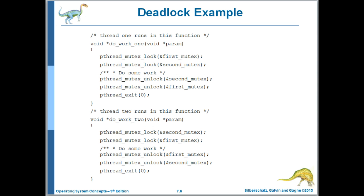Here's an example that shows deadlock due to mutexes not being requested in a numerical order. The first thread requests the first mutex, then the second mutex in that order. You can see that the second thread requests them in the reverse order — first the second mutex, followed by the first mutex.